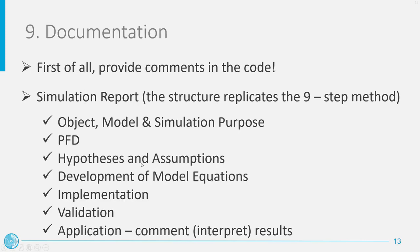I would like to conclude this video by discussing model documentation, an aspect that generally does not receive as much attention as it deserves. First of all, it is important to provide extensive and self-explanatory comments in the model's code, such that the mathematical structure or numerical procedure for solving the system of equations is apparent also for other users. Besides, it is also useful to document the characteristics of the model and the other outcomes of the modeling activity in a dedicated report. An effective way to prepare this document is to adopt a report structure which follows the steps of the nine-step method itself. The report will thus start discussing the model's purpose and will end up commenting the simulation results. Keep in mind that in a scientific report it is necessary to provide an interpretation of the results, not just their description.